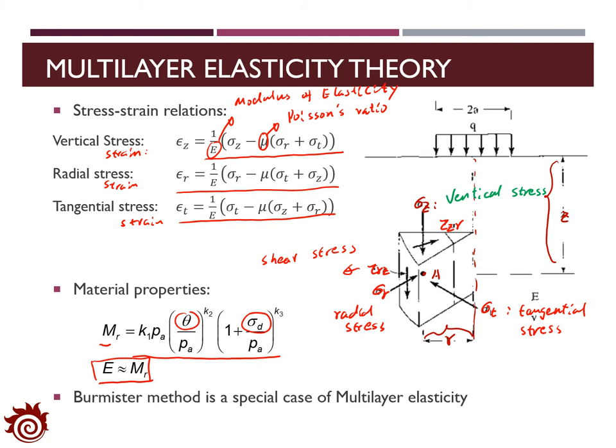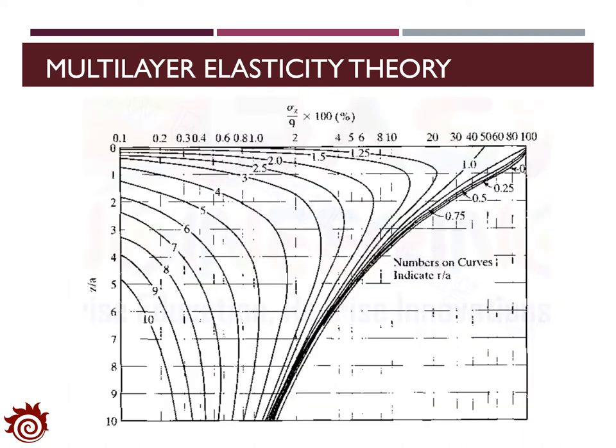The Burmister method is actually one special case — a simplification — of the multi-layer elasticity theory. In the multi-layer elasticity theory, the estimation of vertical, tangential, and radial stresses and strains is very complicated and difficult to find analytically.